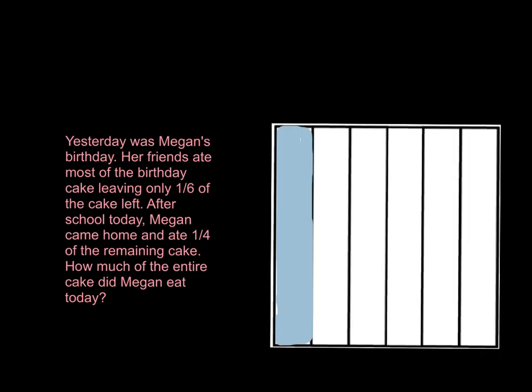I have shaded in one-sixth of the cake in blue below, and our goal is now to find out what is one-fourth of one-sixth. In order to do that, I'm going to divide the sixth of the cake that's left into four equal sections. Each one of these represents one-fourth. And I know that this is the amount that Megan ate today.